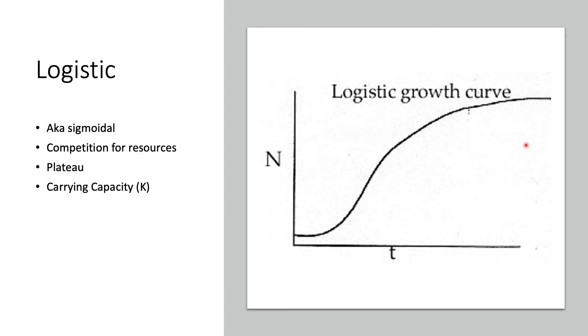This population size is determined by the maximum population size that a particular environment can sustain, and it's called the carrying capacity, also known as K. This carrying capacity is basically just the maximum population size that an environment can sustain. This is sort of the max here in this case since we're plateauing.